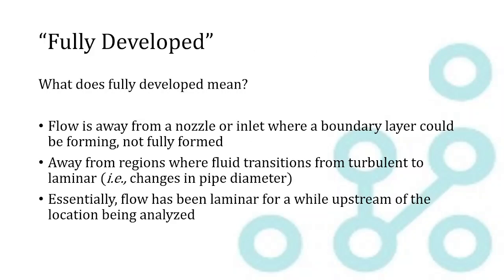Next thing we have to talk about is what does fully developed mean? So this comes up in a lot of problems where it'll say the flow is laminar and fully developed, or this will be an assumption that you have to make. What this means is that the boundary layer of the flow has had a chance to fully develop. The rule of thumb is if you're analyzing a location in the flow that's far away from an inlet region or an outlet region to the pipe, far away from a nozzle, that gives the boundary layer a chance to form. It also means you're away from regions where the fluid might be transitioning from turbulence to laminar flow. Essentially, your flow is fully developed any time it's been laminar for a while, upstream of the location that's being analyzed.